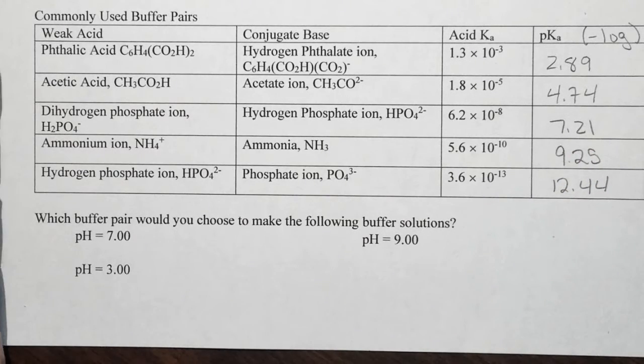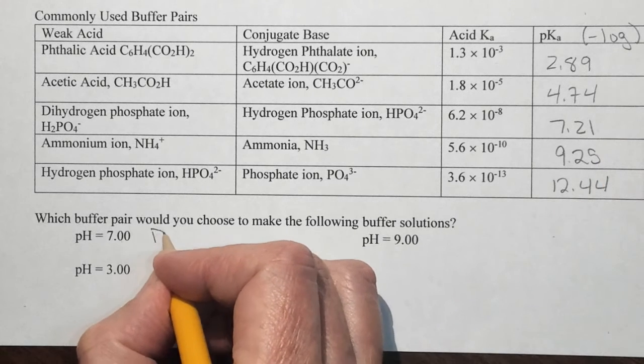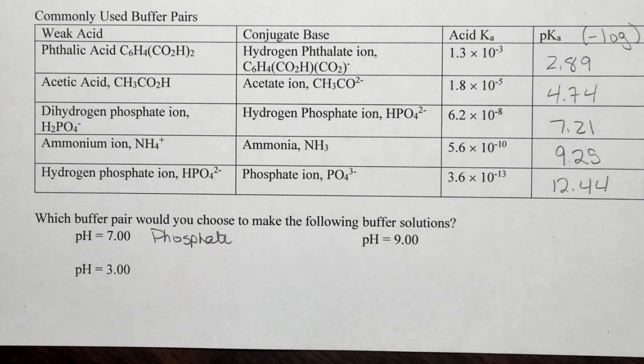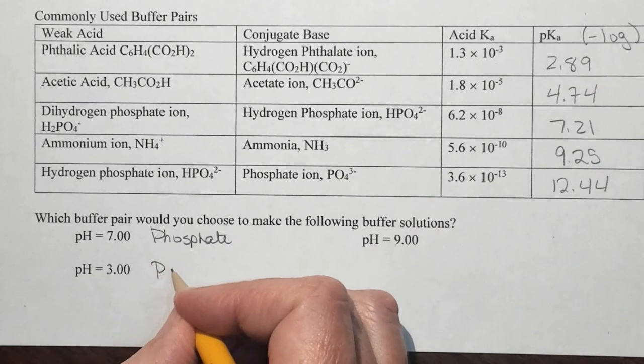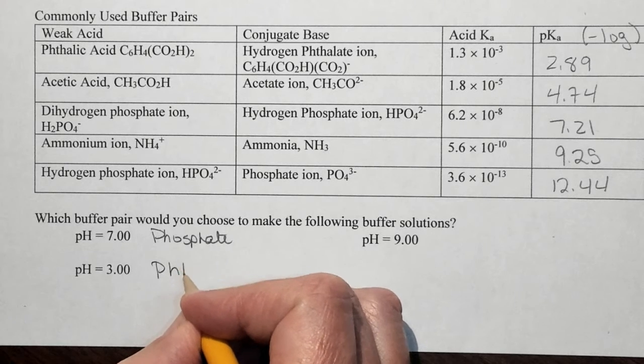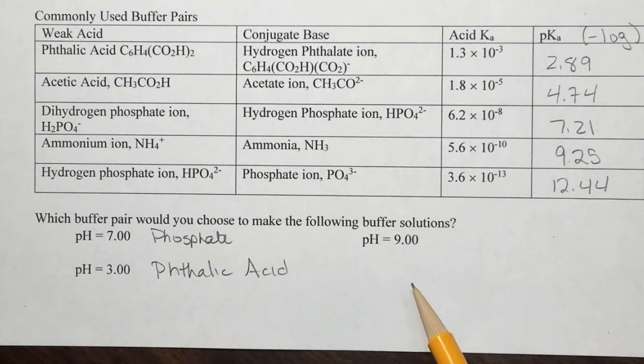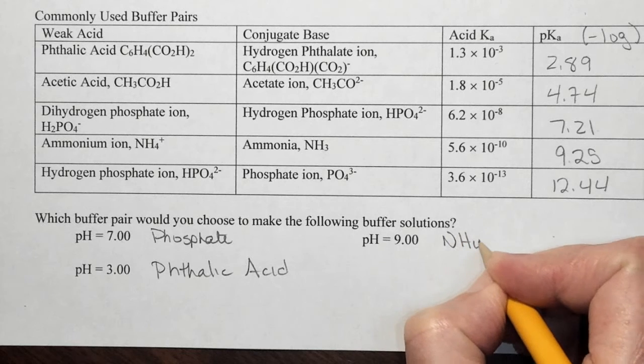So if I want something with a pH of close to 7, I'm going to choose the system here where I get a pH of 7.21. So I'm going to choose the system based on phosphate. If I want a pH close to 3, I look down my pKa values and I'm going to choose the one that is based on phthalic acid. And if I want to control around a pH of 9, I'm going to choose the one that is based on the NH4 ion, the ammonium ion.